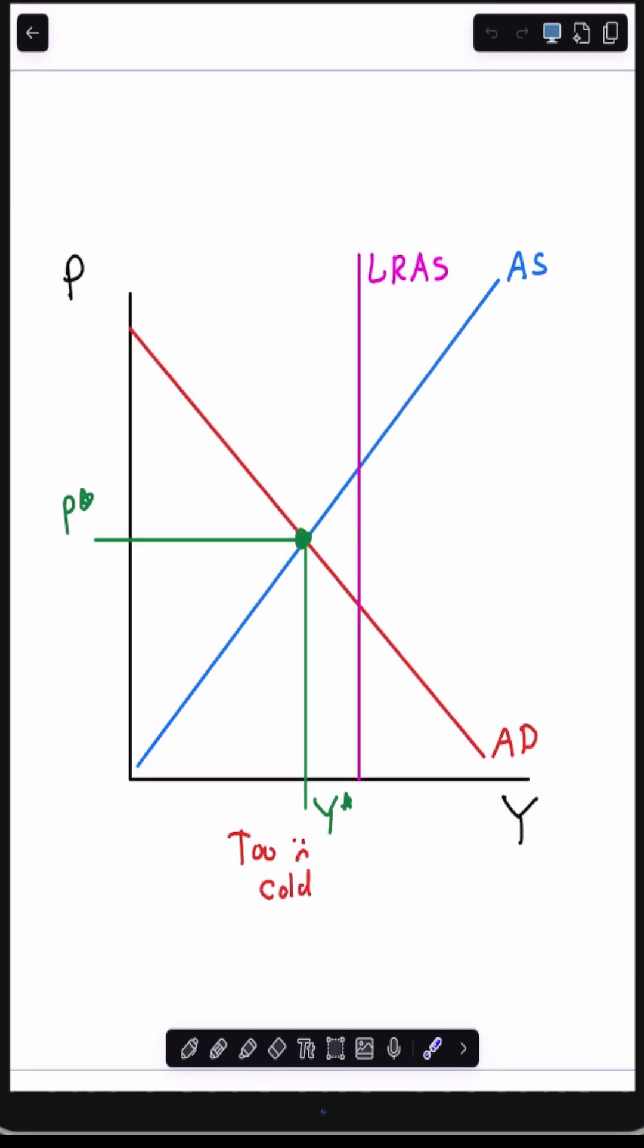On the other hand, if our aggregate supply curve and our aggregate demand curve meet to the left of the long run aggregate supply curve, then output is down and we're in a recession, our economy is too cold and we're sad.